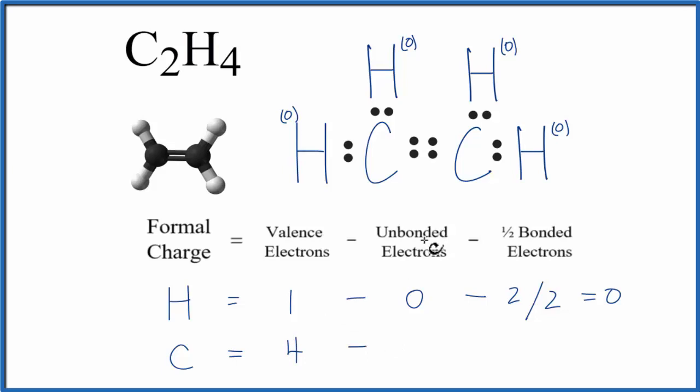We'll subtract the unbonded valence electrons. All of the electrons around the carbon are involved in chemical bonds between atoms, so we don't have any.